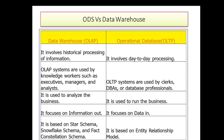OLAP systems are primarily used by upper-layer analysts, managers, or executives for decision-making purposes — they make organizational decisions based on the data. Whereas OLTP systems are used by clerks, DBAs, or database professionals.